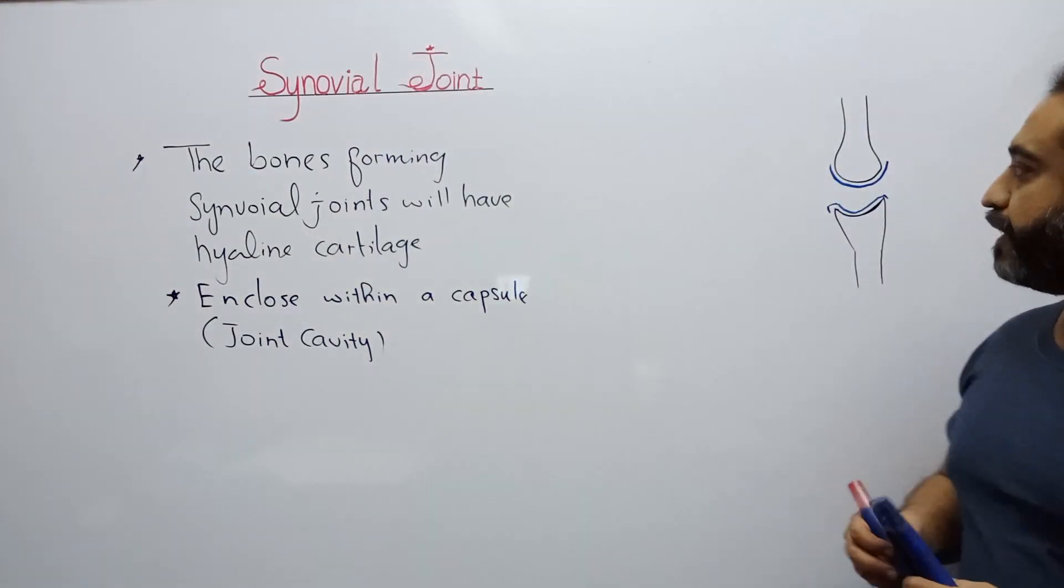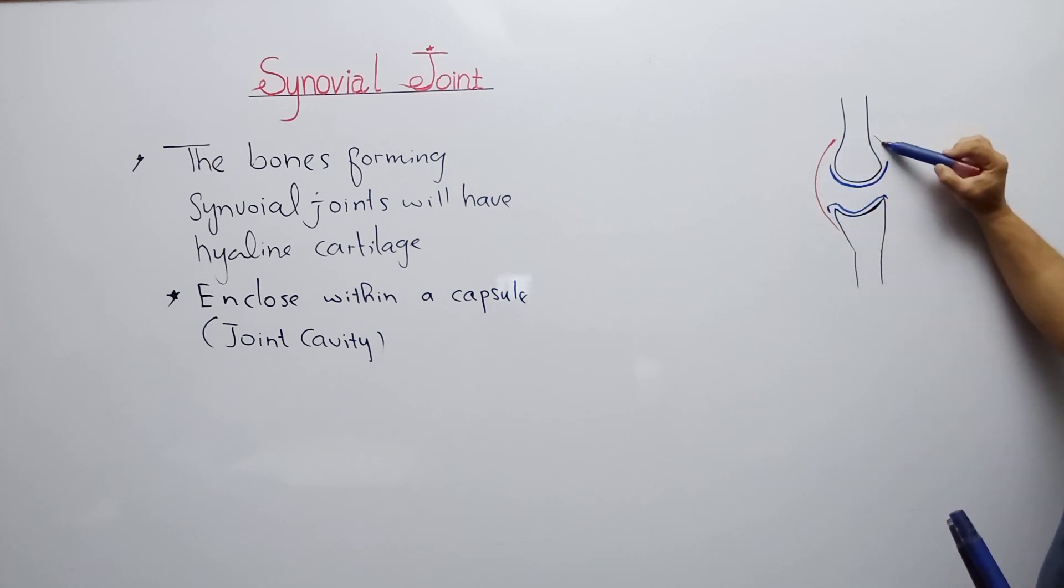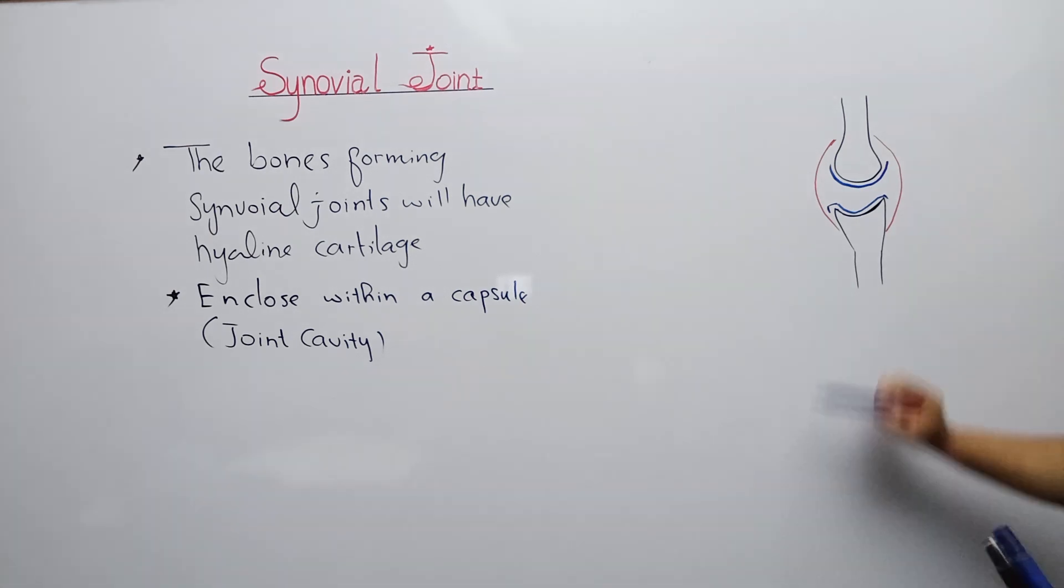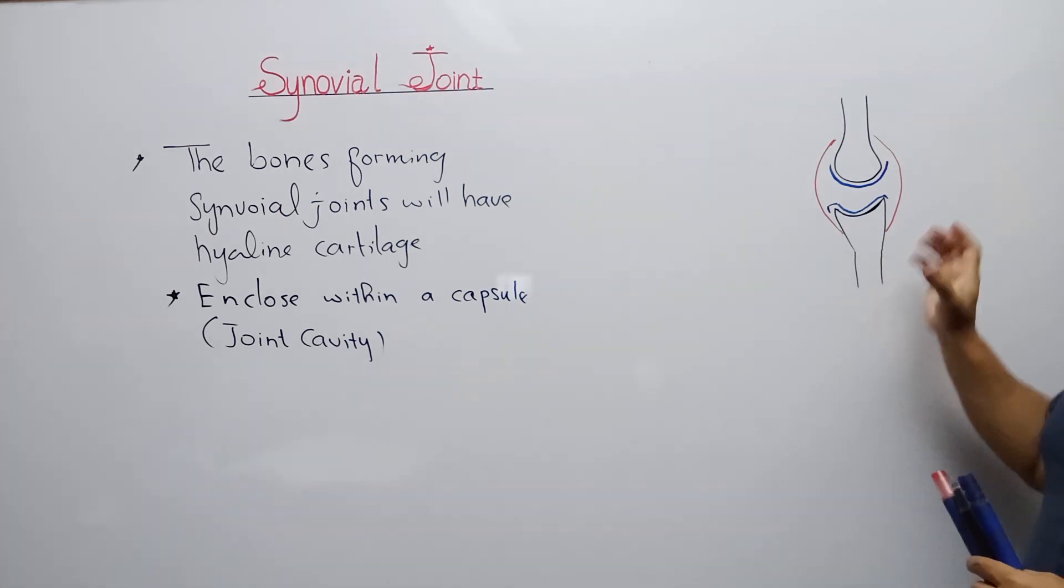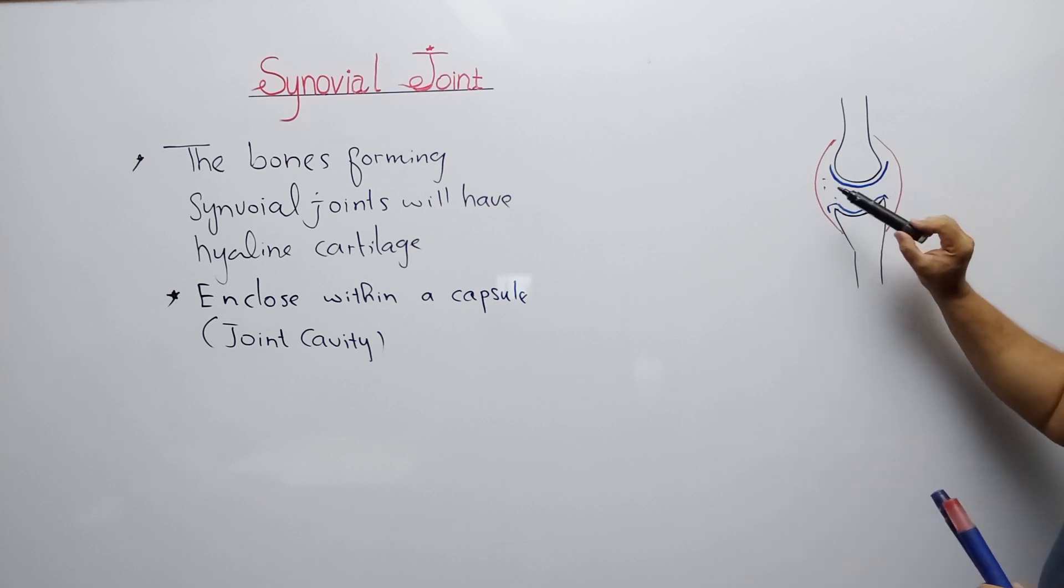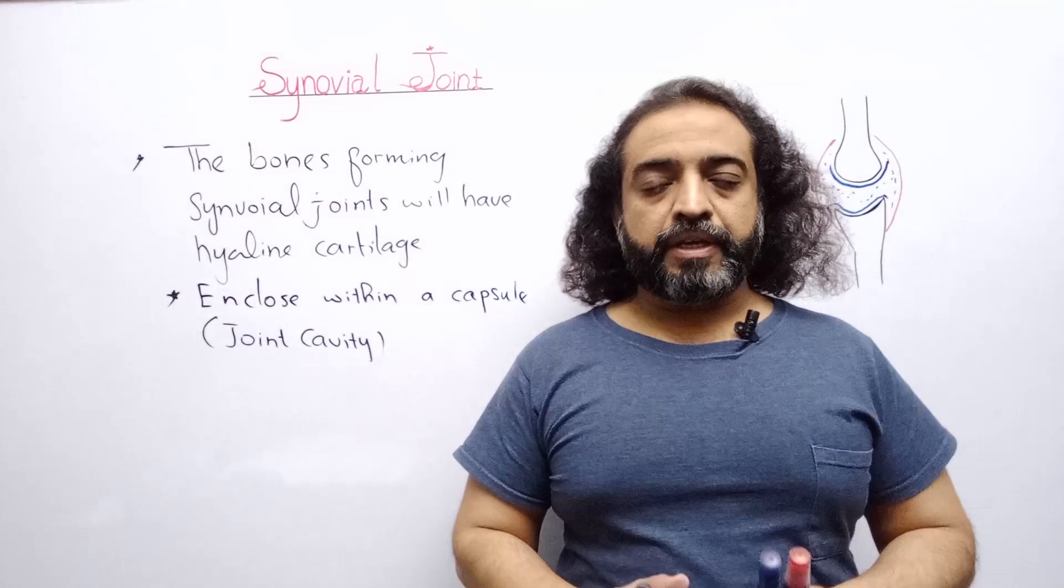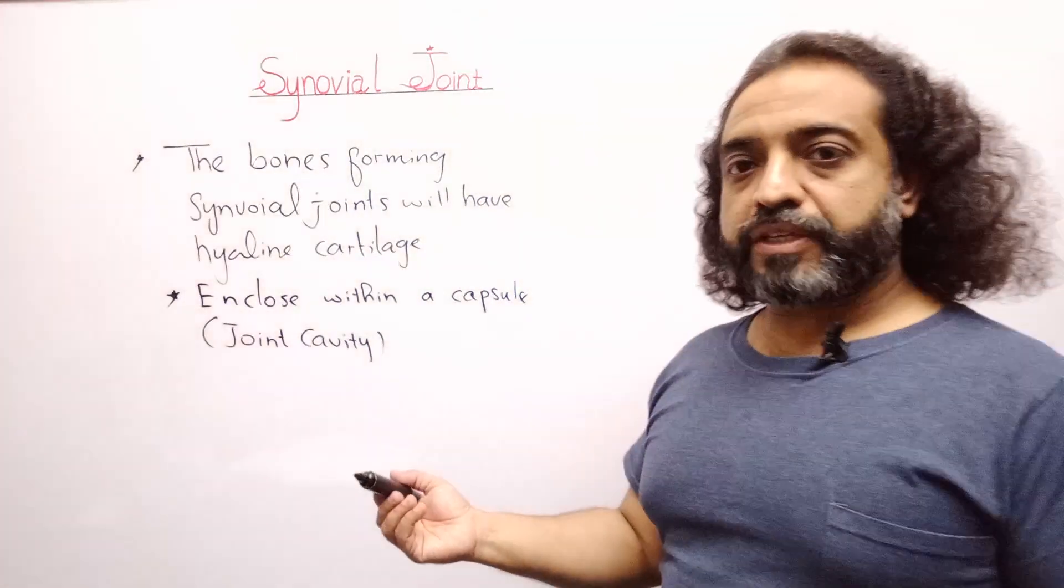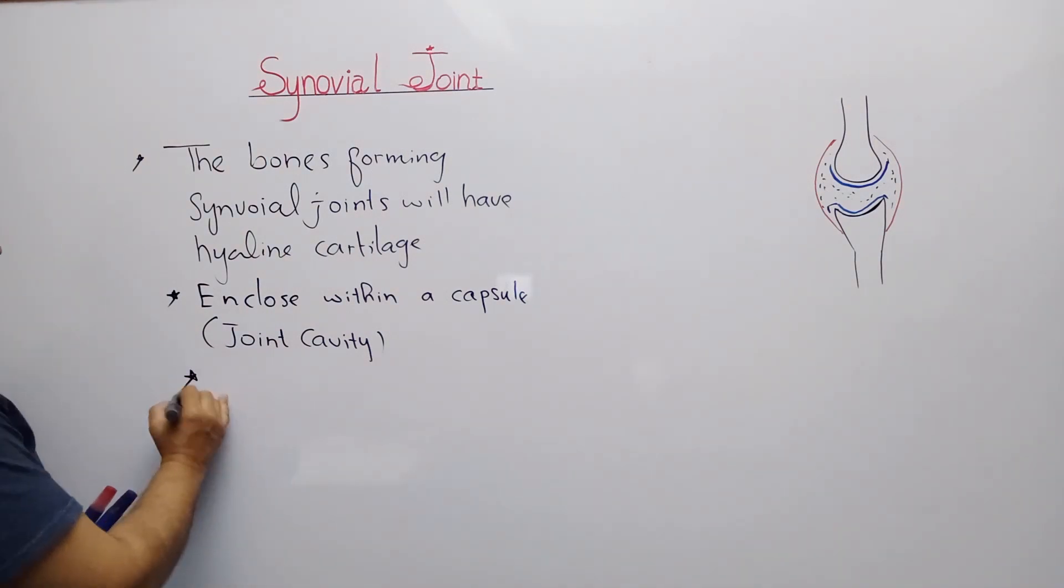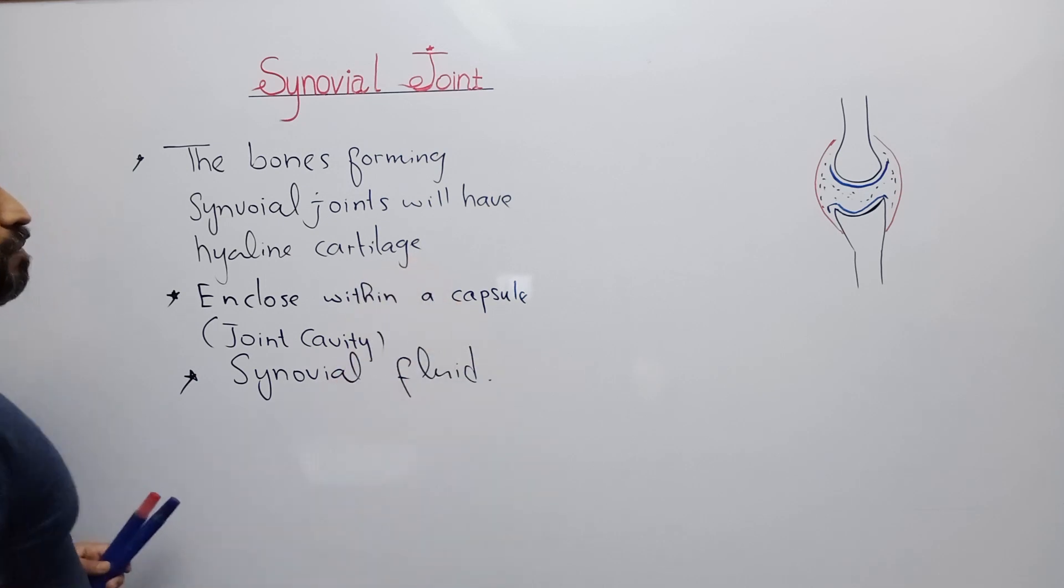Synovial joints are always enclosed by a cavity. Here is a capsular cavity, basically made up of fiber cartilage, and it makes a cavity. Third, very important, in the cavity there is present a fluid which is called synovial fluid. This fluid provides fluidity and reduces the friction between the joints.